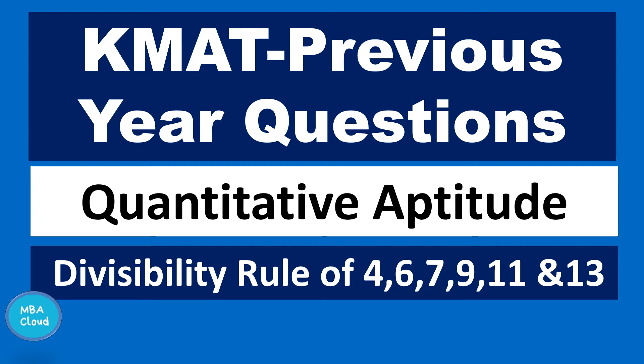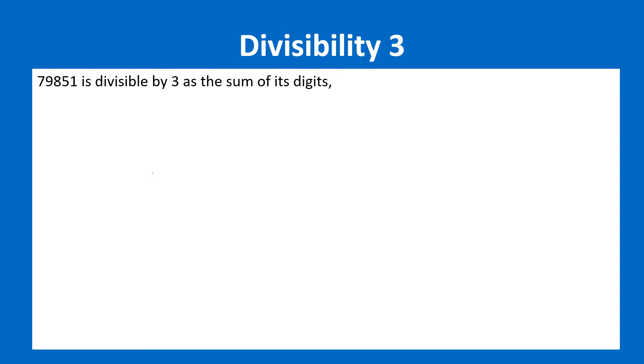First, we will discuss divisibility by 15. Divisibility by 3 is very simple. To check divisibility by 15, we check for both 3 and 5. Let's see how we look at divisibility by 3.